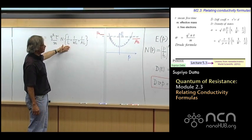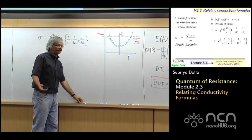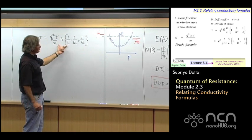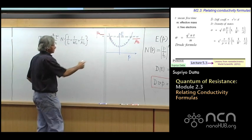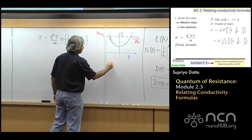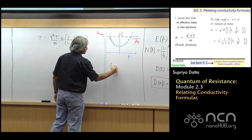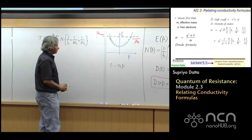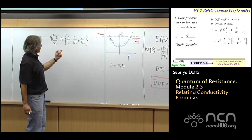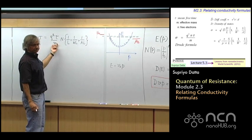But you can get into trouble even if you just try to apply it to graphene, for example. Because with graphene, as we discussed, the energy-momentum relationship is linear. It doesn't look like what I've drawn here. It looks like E equals V0P. It's linear with momentum. And in that case, it's not obvious what mass to use even here, for example.